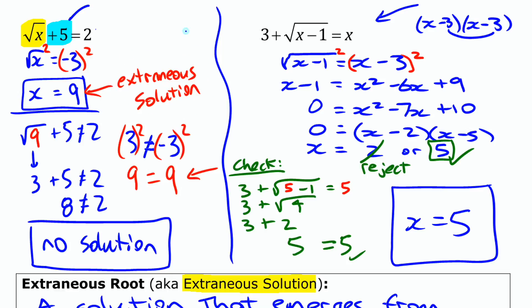So that's a look at solving radical equations where you encounter extraneous solutions or solutions that emerge during the process of solving but aren't actually solutions to the original equation and therefore need to be rejected.